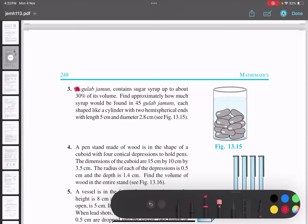A gulab jamun, means one, contains sugar syrup up to 30% of its volume.